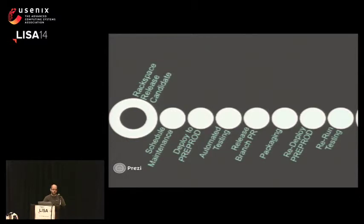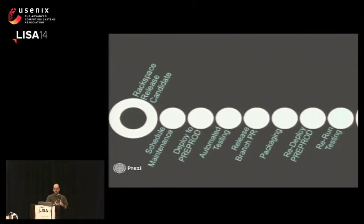We do the deployment into pre-prod — same exact artifact, just a new target. We run through automated testing, manual testing, and go through meetings for go/no-go decisions: is this right, is this good, does this make sense? We then decide that a particular branch at that point is good for release and tag it. Packaging happens if we've made any changes. If we find any problems along the way, we just throw that change into the branch, make a new set of packages, do that deployment again, and repeat until eventually we have something that's good.